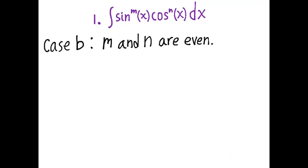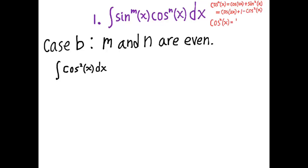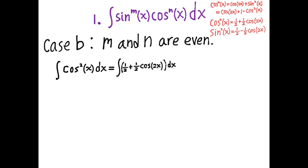Now we go to Case B: what if both m and n are even? An example is the integral of cosine squared of x dx. Cosine squared of x may look problematic until you use the power reduction formula, which can be derived from the double angle identity. You can remember that cosine squared of x equals one half plus one half cosine of 2x. There's a corresponding power reduction formula for sine squared of x as well. This turns the integral into a form without an even power of cosine, and when we integrate that, we get x over 2 plus one quarter sine of 2x plus c.